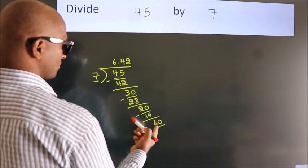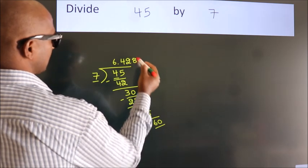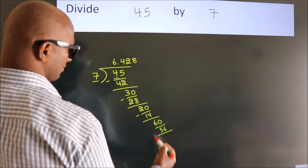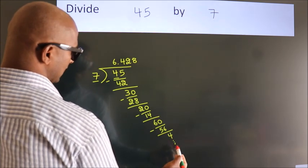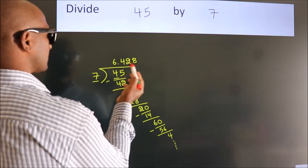A number close to 60 in 7 table is 7 times 8, 56. Now we subtract. We get 4. And the division continues. It is enough if we do up to 3 decimal places.